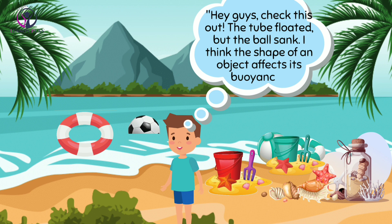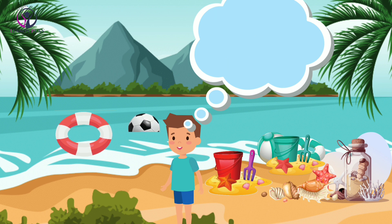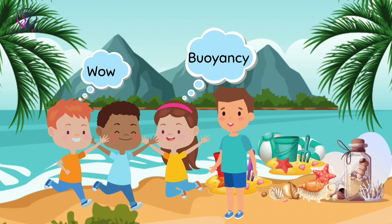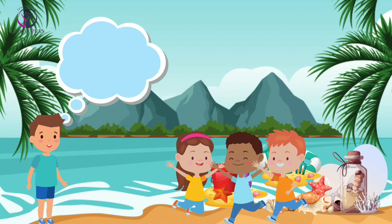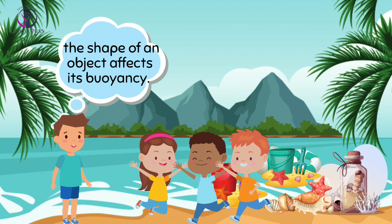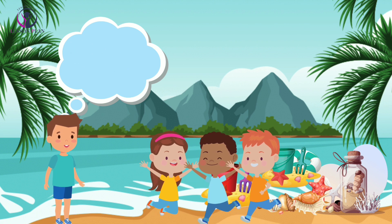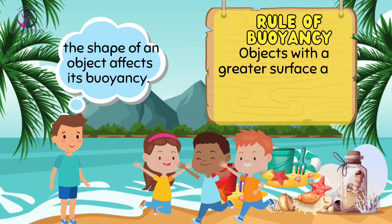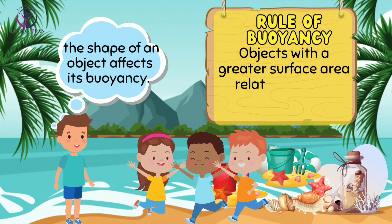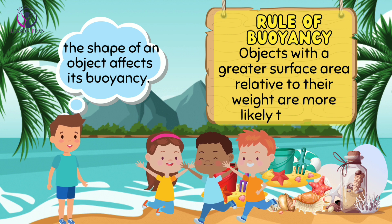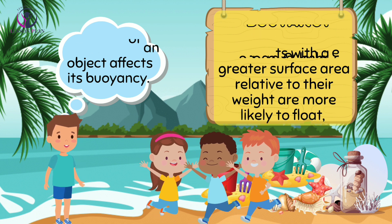His friends looked at each other, amazed at what they were learning. They continued to experiment and learn about the wonderful world of science. Finally, Ali came up with a rule: the shape of an object affects its buoyancy. Objects with a greater surface area relative to their weight are more likely to float, while objects with a smaller surface area are more likely to sink.